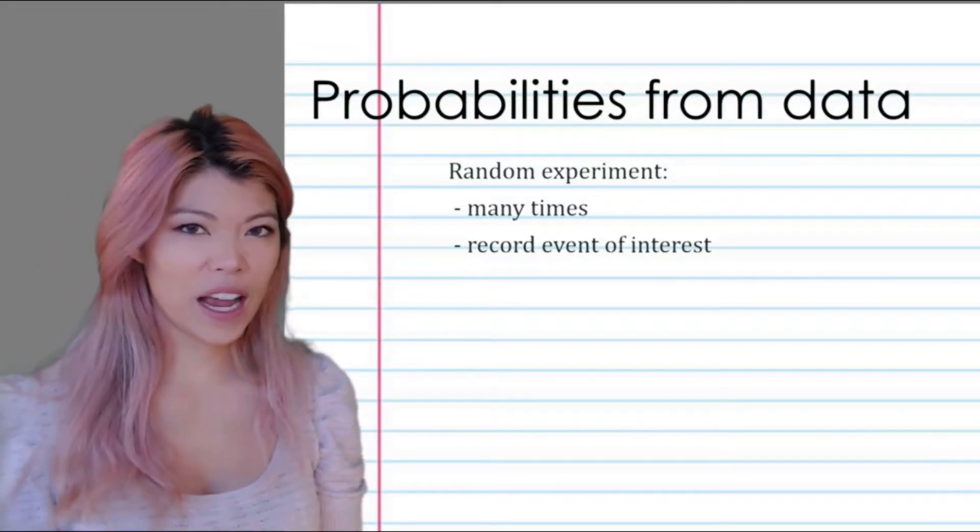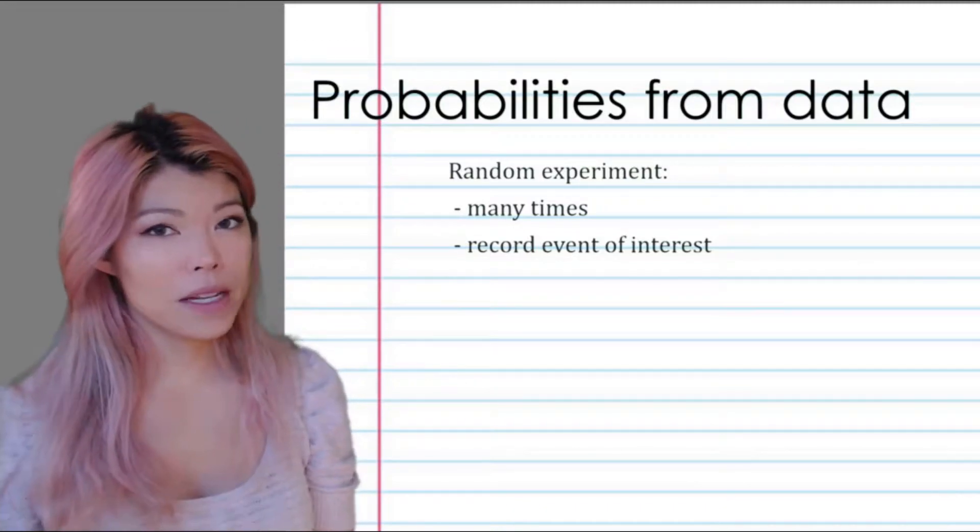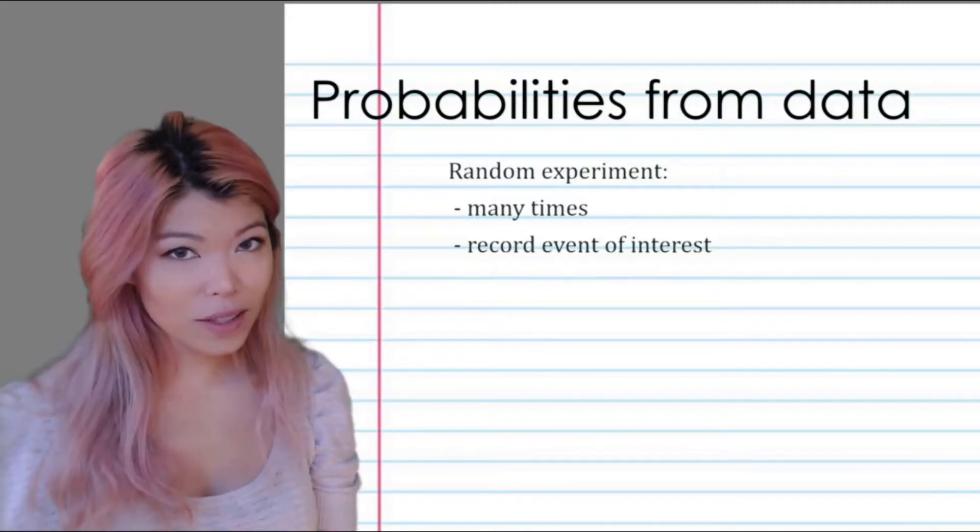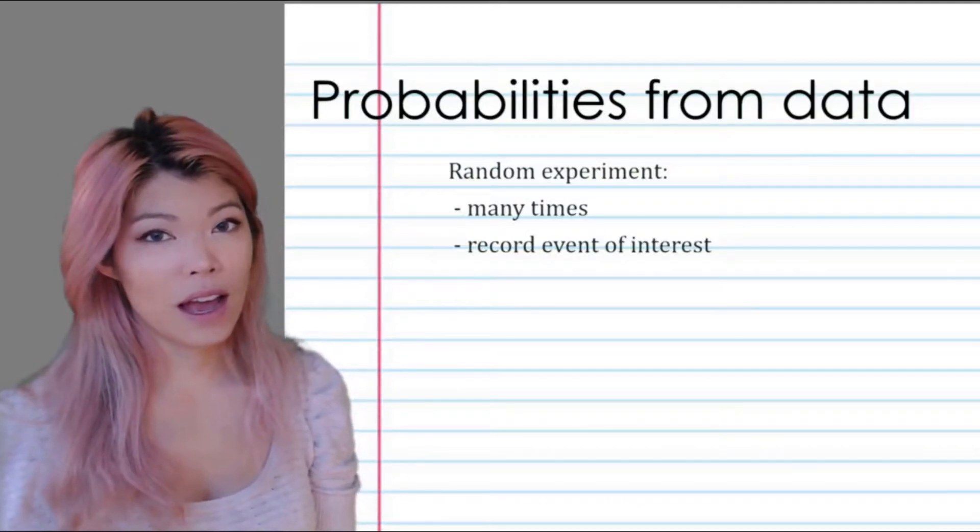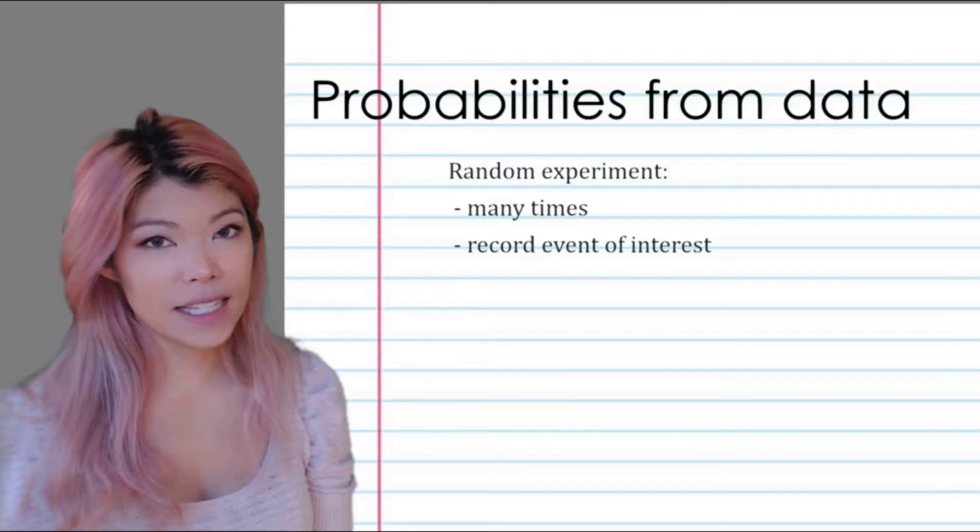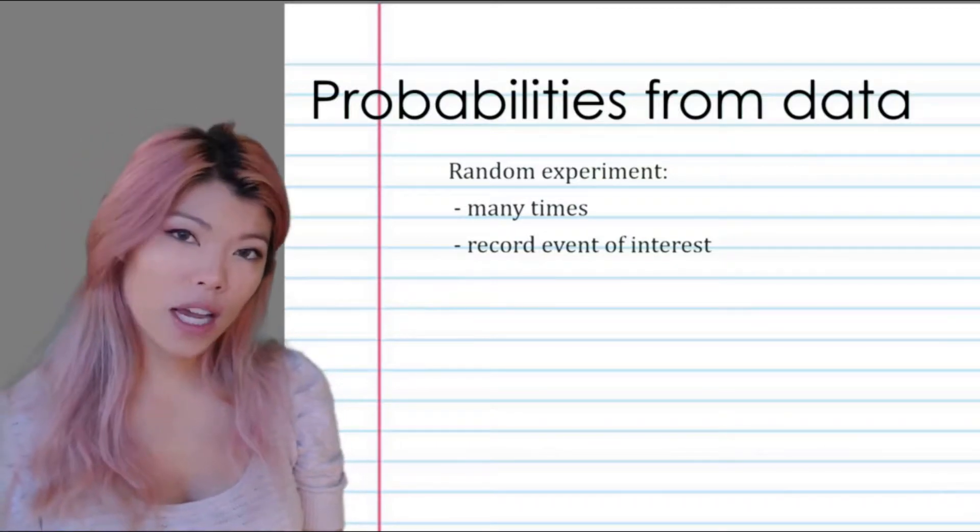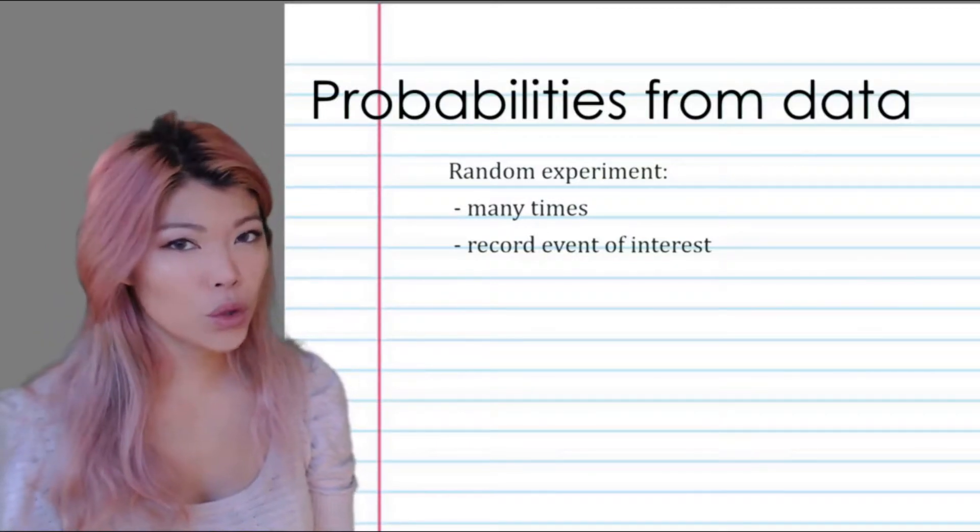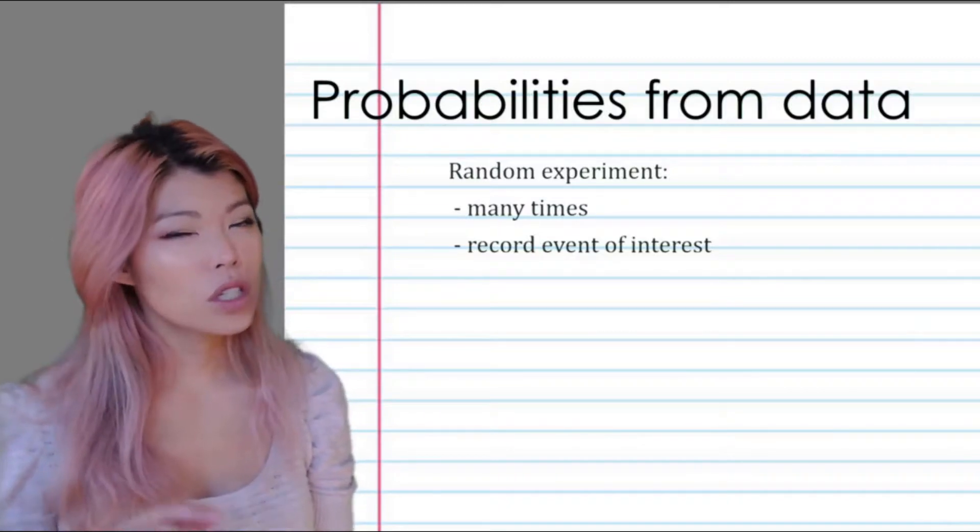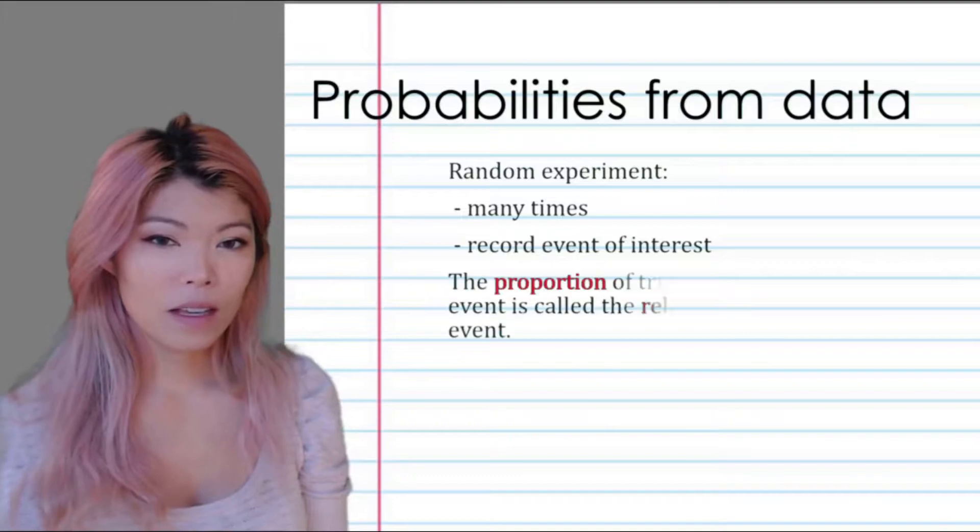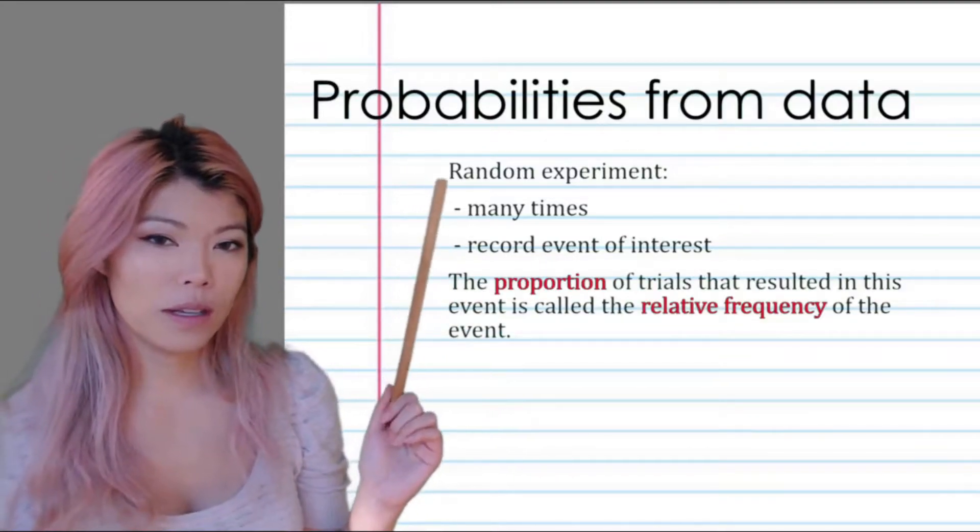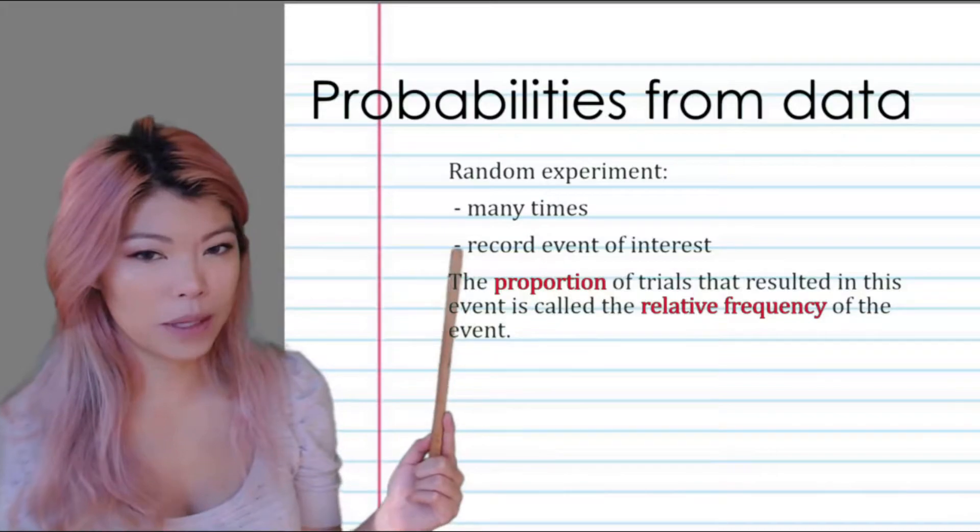If we toss the coin many times, let's say 1000 times, we might end up getting 502 tails and 498 heads, which means the probability of tail in that case will be 502 over 1000, which is close to a half. So it's close to what it's meant to be. We can see that the more times we do the experiment, the closer it is to the actual probability.